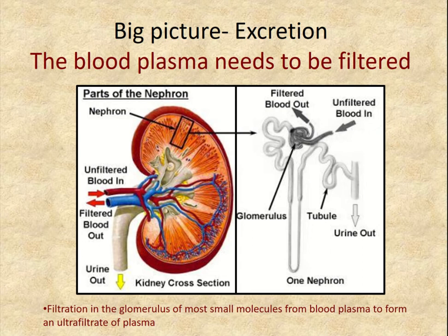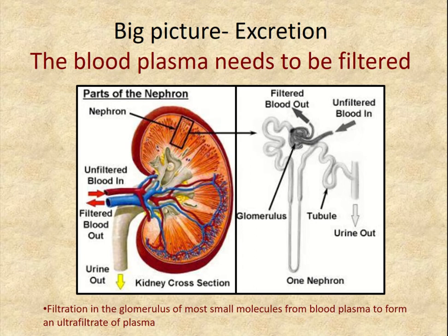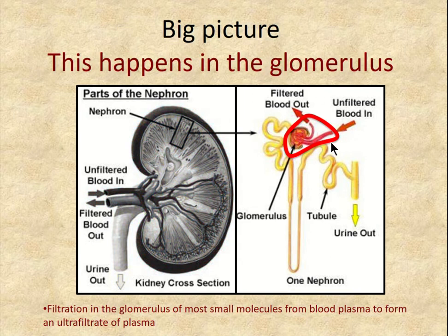The kidney has many functions, but number one is that the blood plasma needs to be filtered so waste products are removed. The kidney allows plasma to filter into a specialized structure, then through tubules that modify the filtrate, reclaiming items back into the bloodstream and allowing waste products to be excreted. This filtration happens in a structure called the glomerulus, which is the hallmark of the kidney.